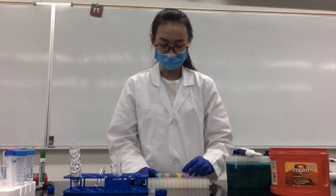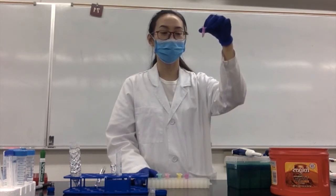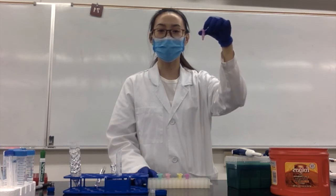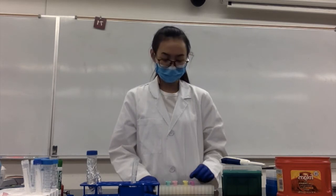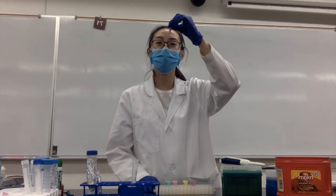For this video, I'll just choose one NTC tube as an example to show you how to do ROS measurement. I've already spun these samples for five minutes at 2,000 rpm. After centrifugation, you should see a cell pellet at the bottom of each tube.